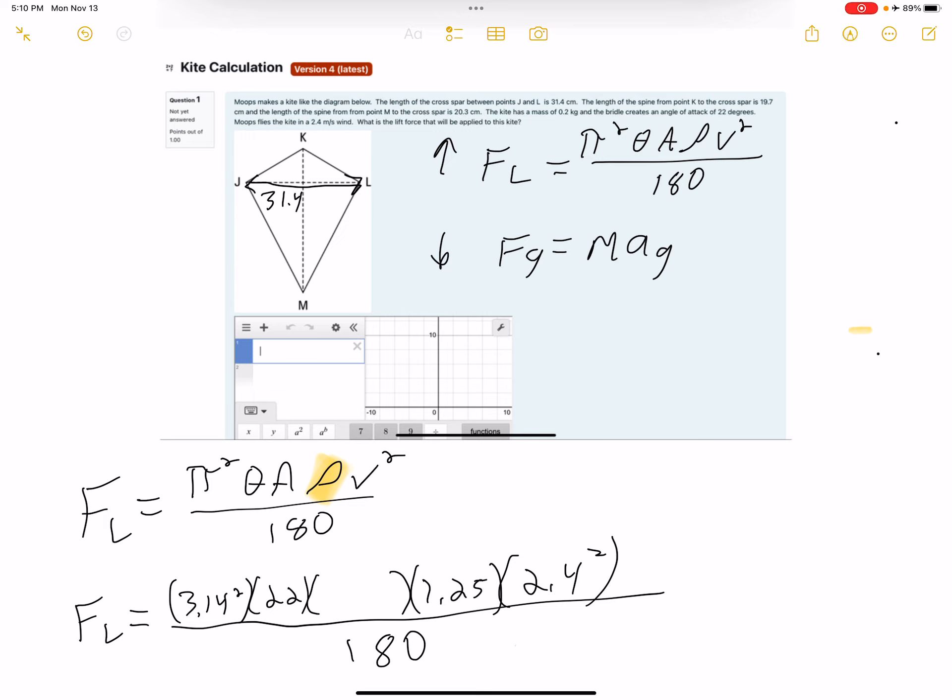The next sentence says the length of the spine between K and the crossbar is 19.7. So that is this between K and the crossbar is 19.7. And then finally, it says the length of the spine between points M and the crossbar is 20.3. So that's this distance is 20.3.